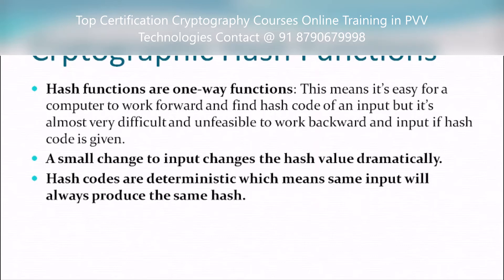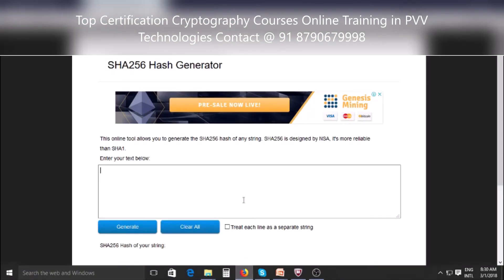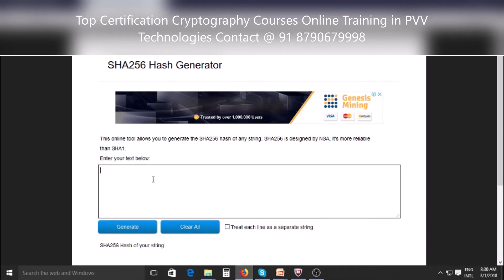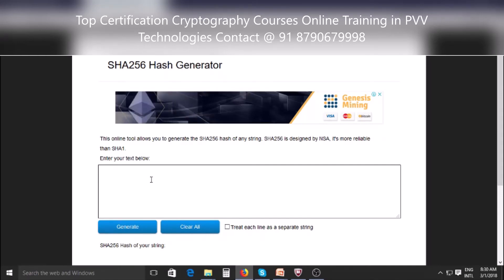Now let's see a few more properties of hash functions. Hash functions are one-way functions. This means it's easy for a computer to work forward and find the hash code of an input, but it is very difficult and unfeasible to work backward and find the input if only the hash code is given. To understand this property, I will show a demo.